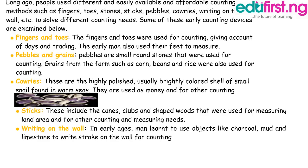Number two: pebbles and grains. Pebbles are small round stones that were used for counting. Grains from farms such as corn, beans, and rice were also used for counting.